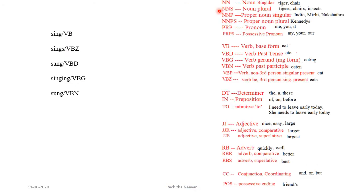Let us discuss some common tags defined in Penn Treebank. NN is the tag for noun singular — for example, student, tiger, chair. NNP is the tag for proper noun singular — for example, India. NNPS is for proper noun plural — for example, Lamas, Kennedys.